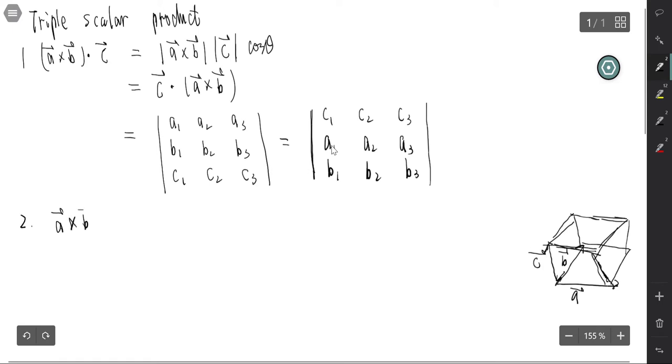That's A cross B dot C, that is the volume. The volume of the parallelepiped spanned by A, B, and C.